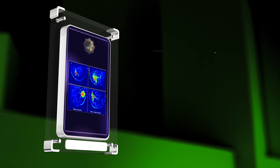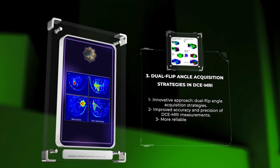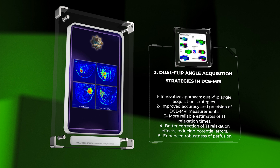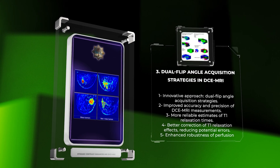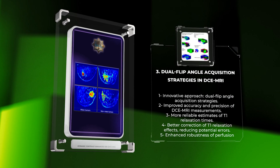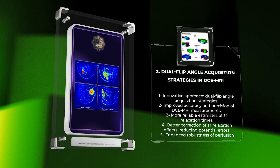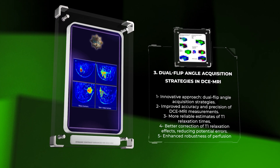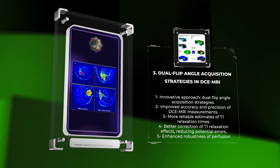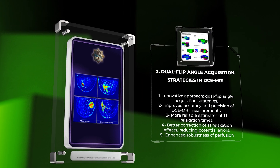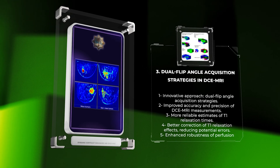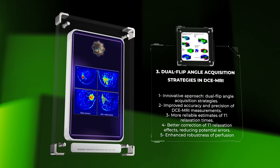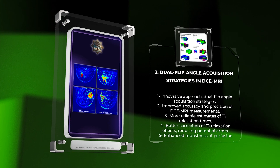Dual flip angle acquisition strategies represent an innovative approach that aims to improve the accuracy and precision of DCEMRI measurements. By acquiring images with two different flip angles, we can obtain more reliable estimates of T1 relaxation times, which are crucial for accurate quantification of contrast agent concentration. This technique allows for better correction of T1 relaxation effects, reducing potential errors and enhancing the robustness of perfusion analysis. Dual flip angle acquisition strategies have shown promising results in liver, brain, and prostate cancer imaging.